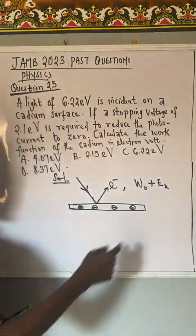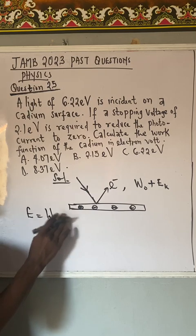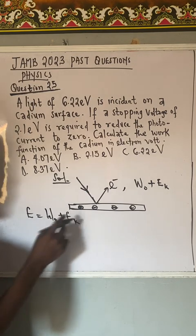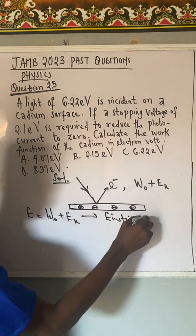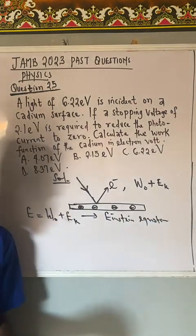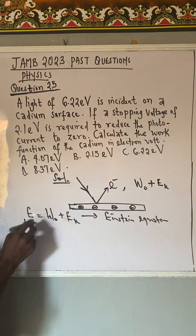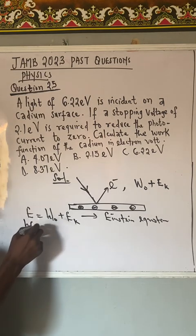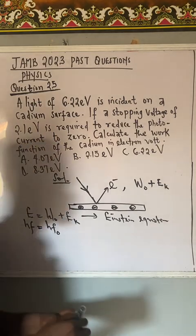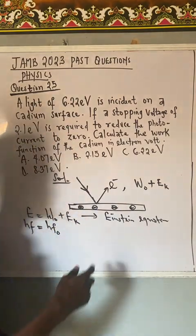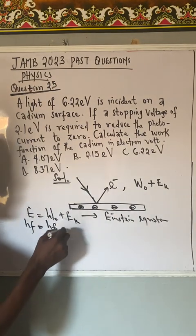This expression can be taken as E equals W naught plus EK. This formula is known as Einstein equation, or Einstein photoelectric equation. This can be taken as HF. W can be taken as HF naught, where F naught is called the threshold frequency, which can be written as C over lambda naught, where lambda stands for the threshold wavelength. But all those ones are not needed yet.